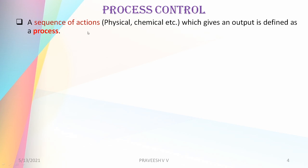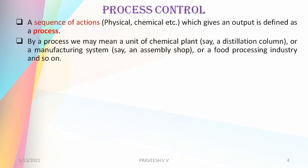A process is defined as a sequence of actions — which can be physical, chemical, etc. — that gives a defined output. By a process we may mean a unit of a chemical plant such as a distillation column, a manufacturing system such as an assembly shop, or a food processing industry, and so on.